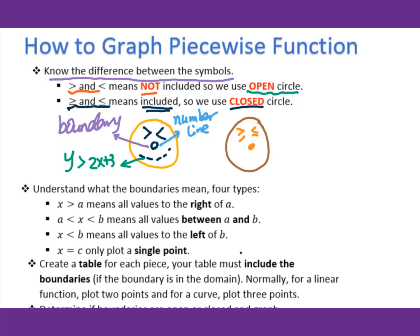For a linear inequality function, you have to use the solid line — we call this the angry face. When sketching y greater than or equal to 2x plus 3, use the solid line to sketch the linear function and shade above the line. For a piecewise function with greater than or equal to or less than or equal to, use the solid circle for the boundary.